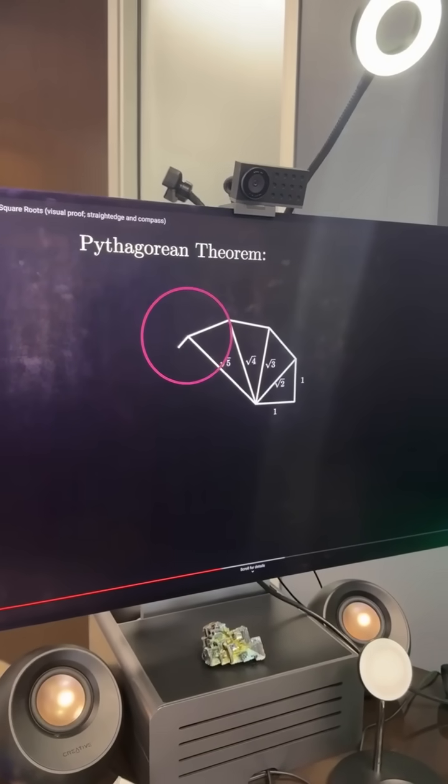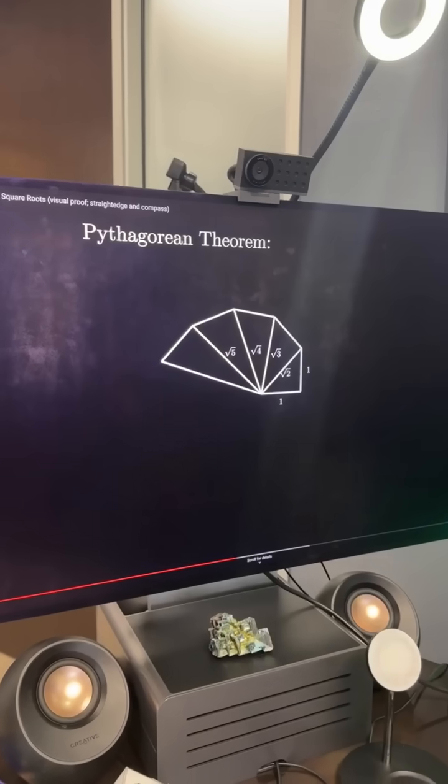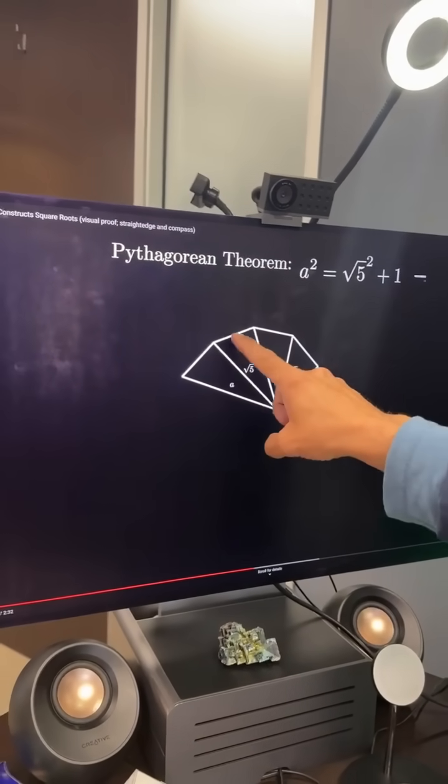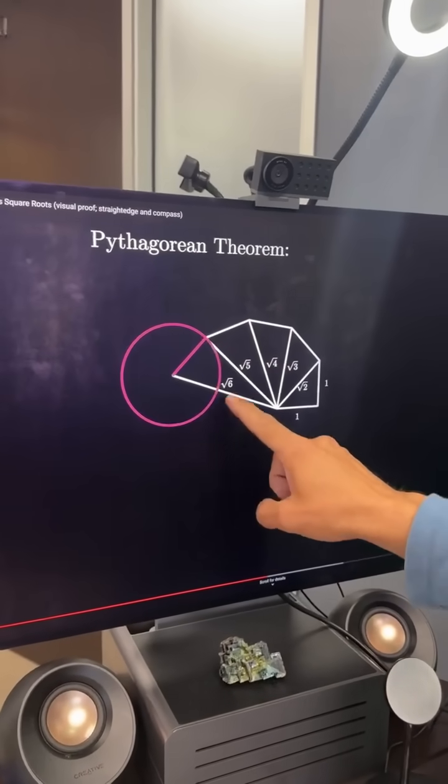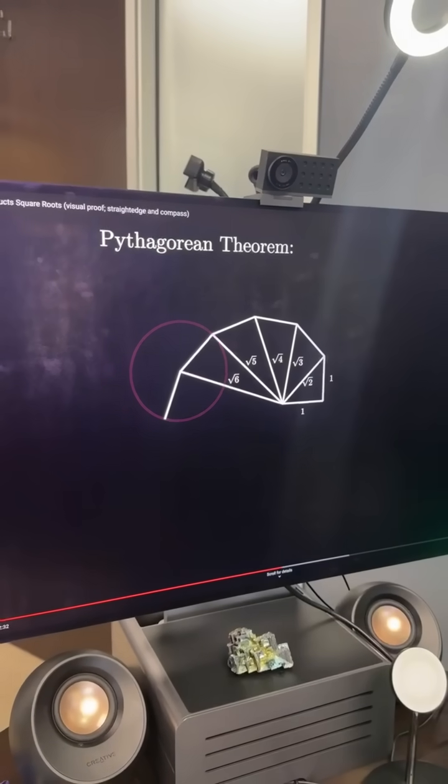We could continue this forever, in fact. And if we keep the side value of 1 here, it will always be the very next square root value, without exception.